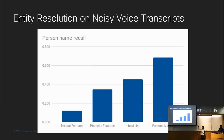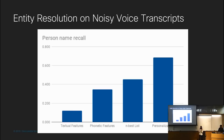Here are some numbers showing how important it is to take into account all these features. On our very noisy dataset with a word error rate of almost 50%, when using just textual features to do entity resolution, recall at 1 is very low with accuracy of 0.15. But when we take into account the phonetic features, the N-best list, and the personalization features, it goes up to almost 75%. And when the UI has a carousel where you can scroll through a few options, usability becomes even better. This set of features transforms the app from being virtually unusable to reasonably intelligent.